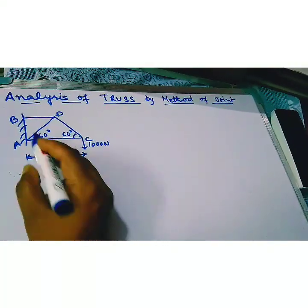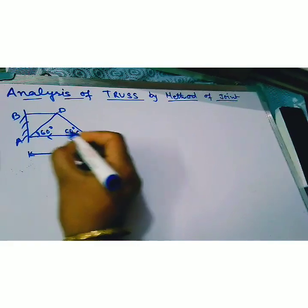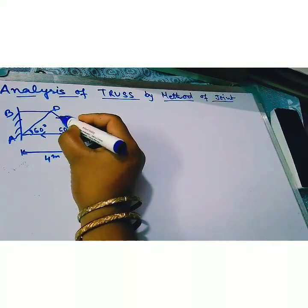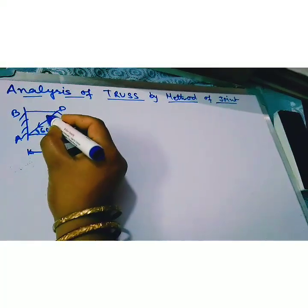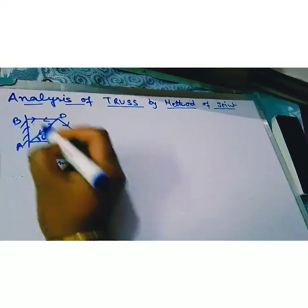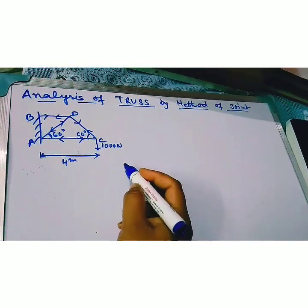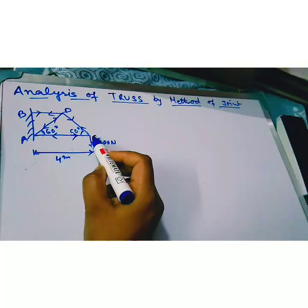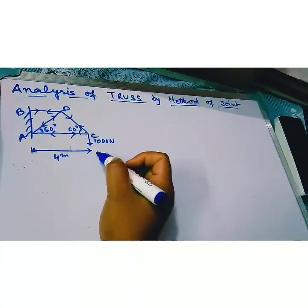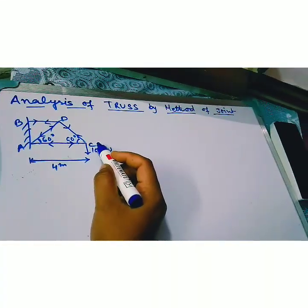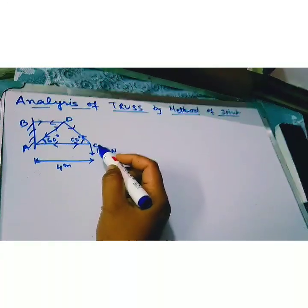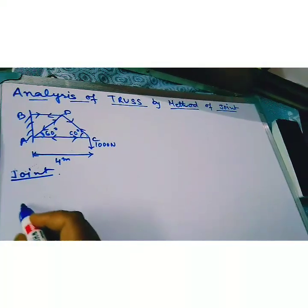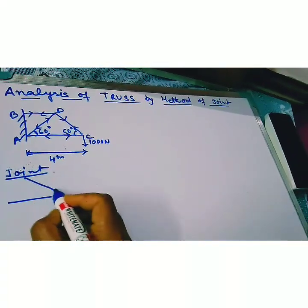First we assume the member either tension or compression. We start from joint C because here two unknown force FAC and FCD. We can easily solve by two equilibrium equation. So we start from joint C and consider the equilibrium of joint C.